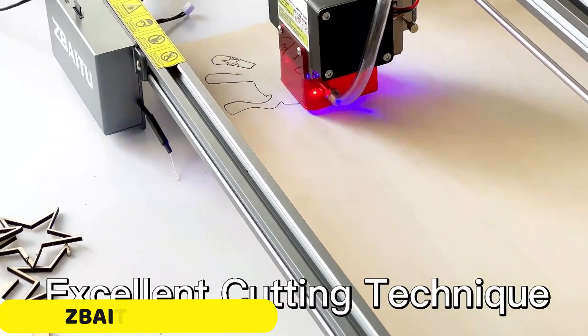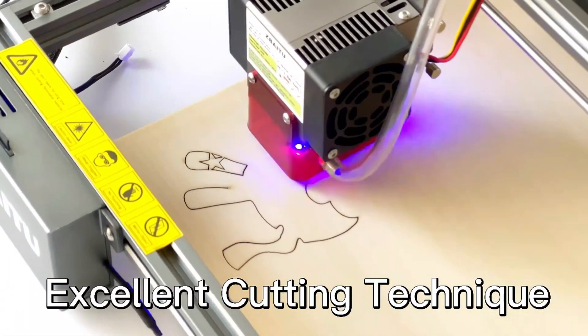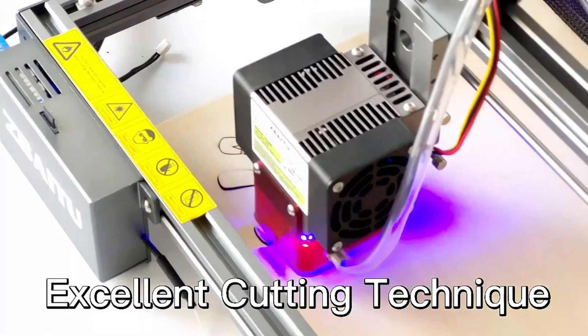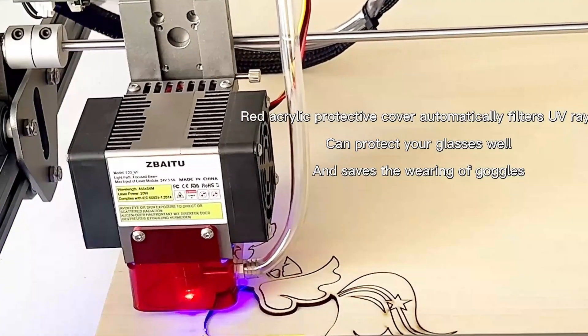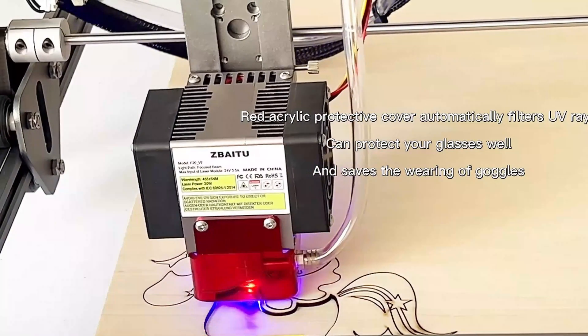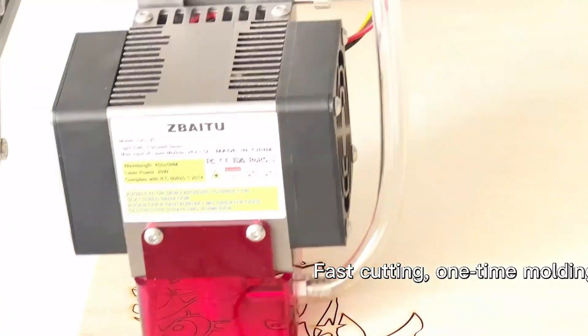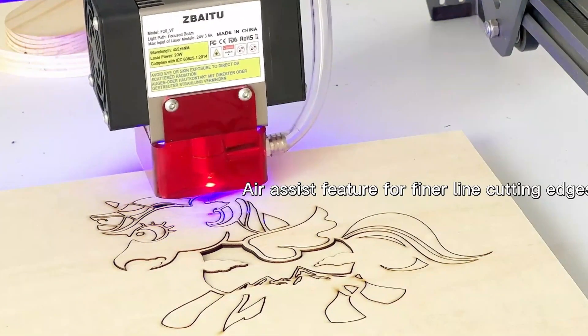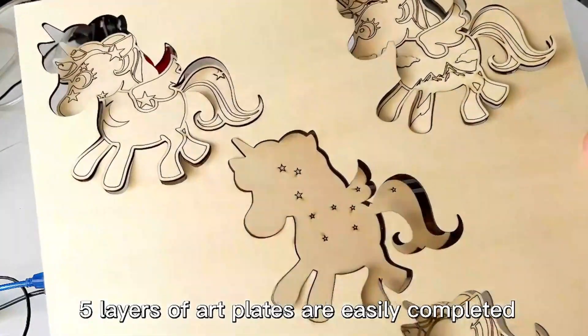Number 5. ZBAITU 130W Laser Engraver. The ZBAITU 130W Laser Engraver is a powerful tool for laser cutting and engraving, designed to meet the needs of both professional and hobbyist users. Its expanded engraving area of 80x80 cm allows users to create a wider range of projects. The engraver's 20W high-power laser module, the F20VF, utilizes 4-beam 5W plus compressed technology, resulting in increased cutting and engraving speeds.